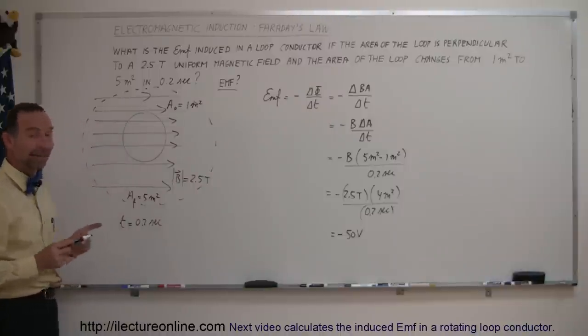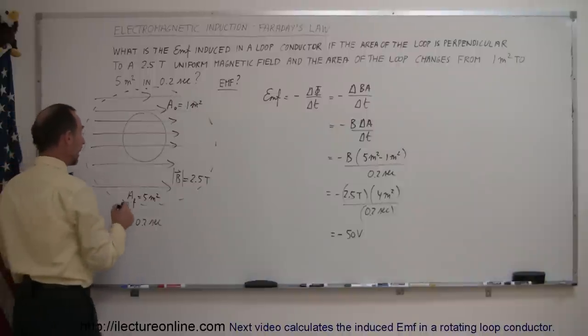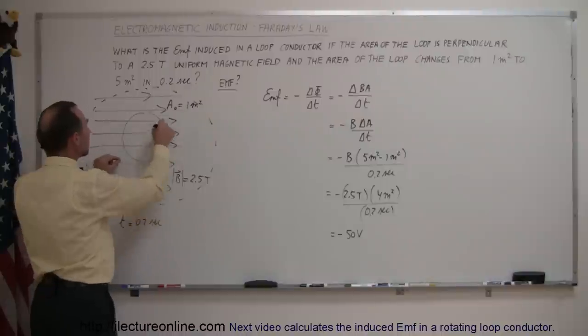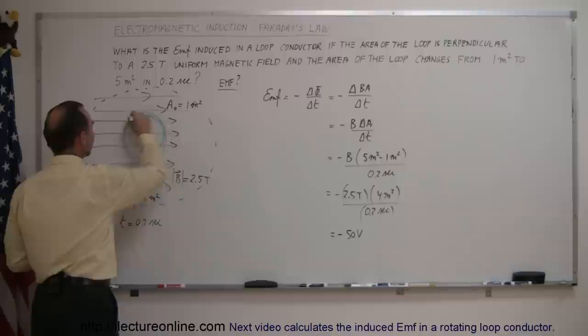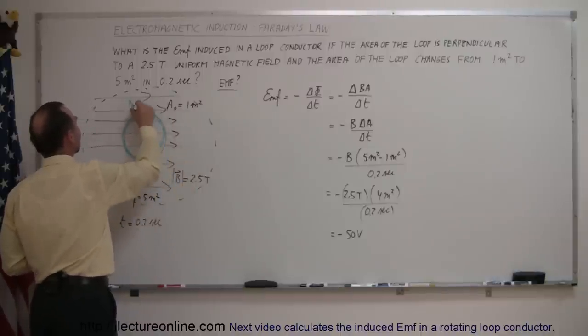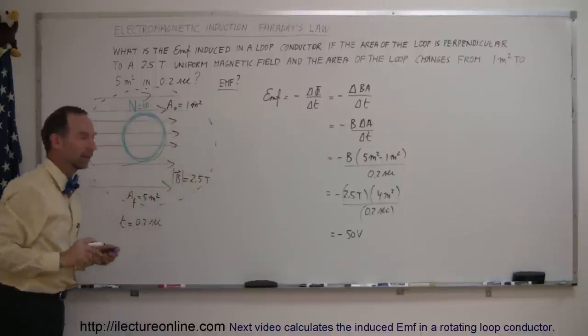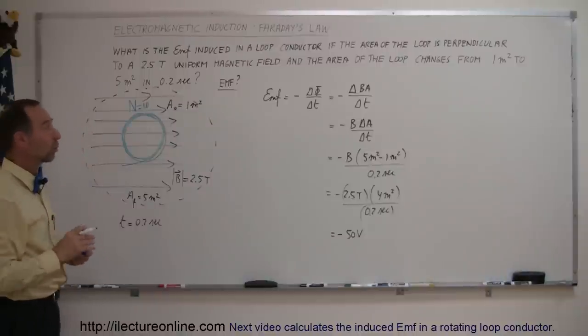Now, let's say instead of a single loop, we had a conductor which was looped a multiple number of times, so let's change the problem just a little bit. If we now had a conductor which had a bunch of loops like this, and let's say that n equals 10.